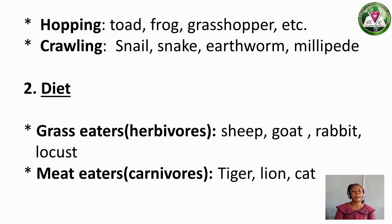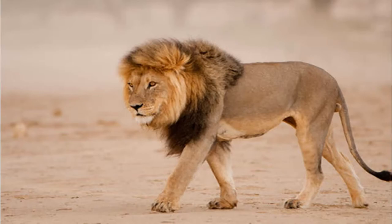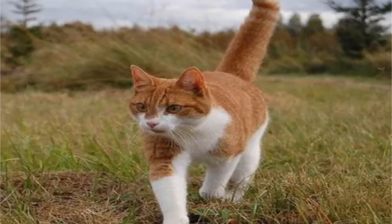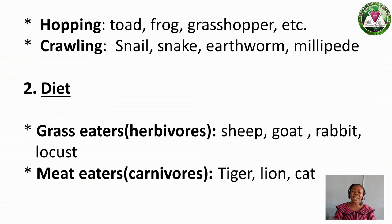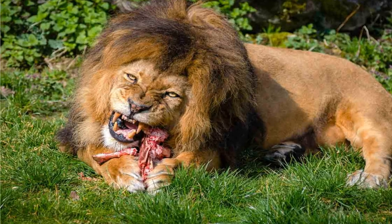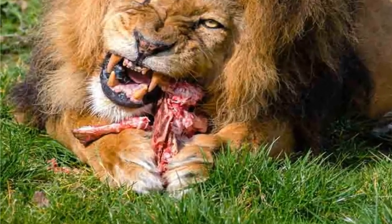The second diet group is Meat Eaters — we call them Carnivorous animals. Examples are tiger, lion, and cat. These are the ones that eat meat alone. You know tiger and lion — the way they behave, when they see any animal around, they grab it and eat it. So they eat meat alone.